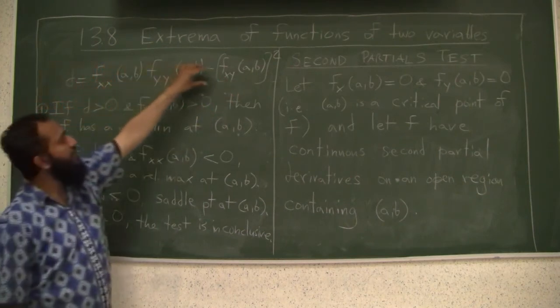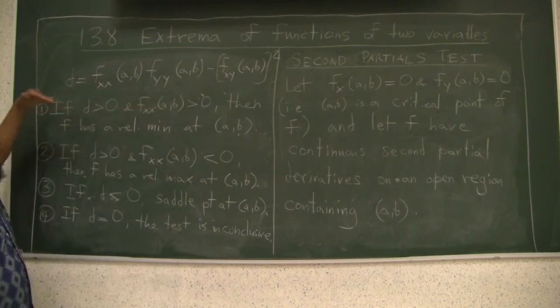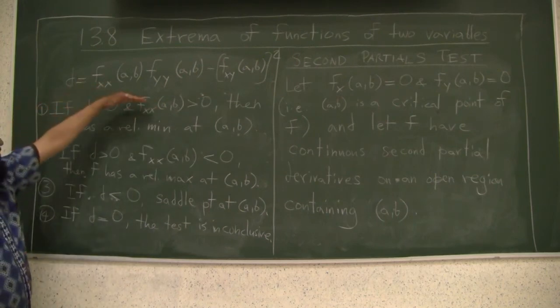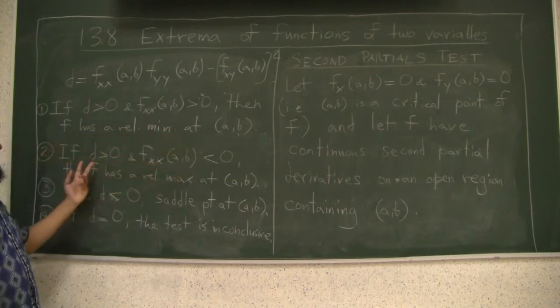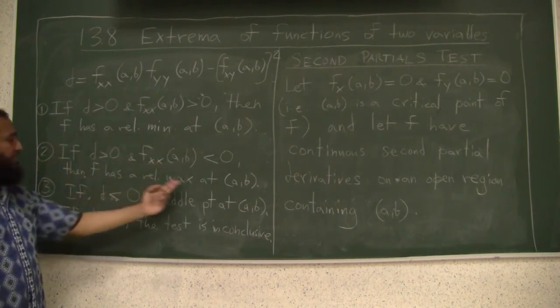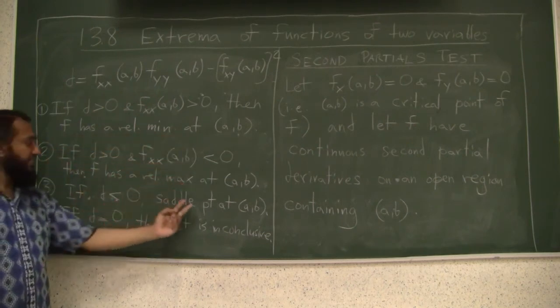So you compute this quantity at the point (a,b). If that quantity is positive and f_xx at (a,b) is positive, then f has a relative minimum. Then under this condition, it has a relative maximum. If d is negative, it is a saddle point.